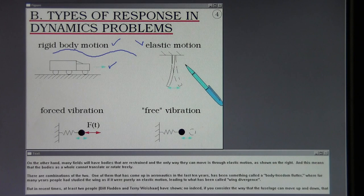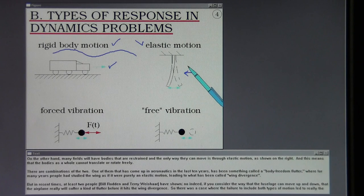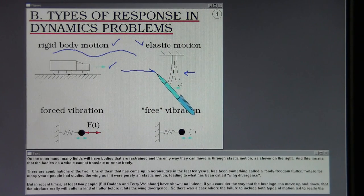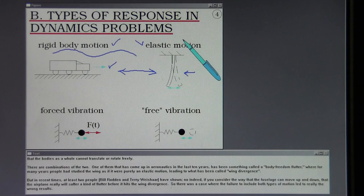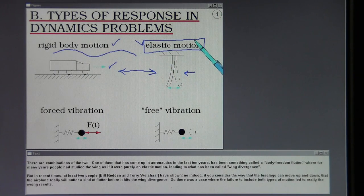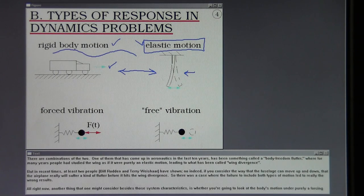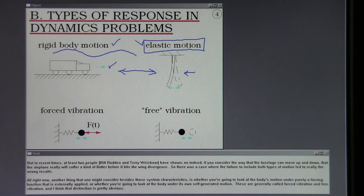In the aeronautical area, if you're looking at flight mechanics and you study the mode called the fugoid mode, which is a long-term longitudinal mode of motion, that is done by assuming that the aircraft is rigid. Similar things would happen in an automotive area. On the other hand, many fields will have bodies that are restrained, and the only way they can move is through elastic motion. There are combinations of the two. One that has come up in aeronautics in the last ten years has been something called body freedom flutter, where for many years people had studied the wing as if it were purely an elastic motion leading to wing divergence. But in recent times, at least two people have shown that if you consider the way that the fuselage can move up and down, the airplane really will suffer a kind of flutter before it hits the wing divergence. So there was a case where the failure to include both types of motion led to really the wrong results.